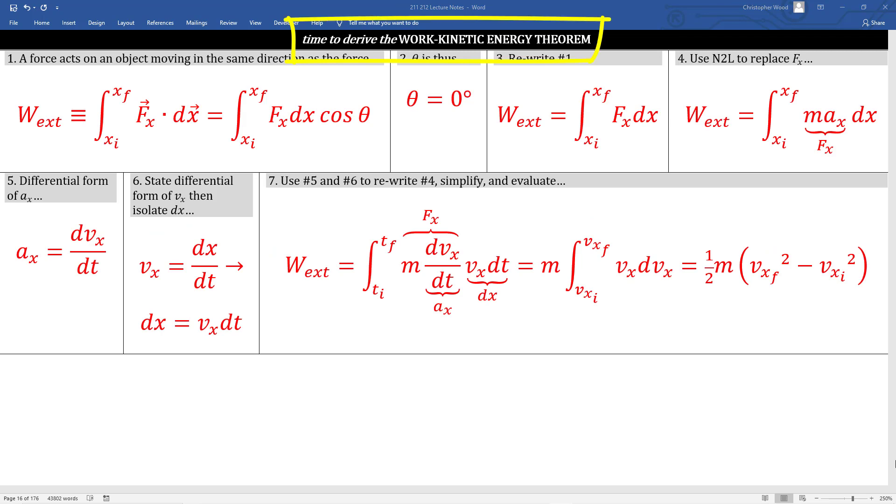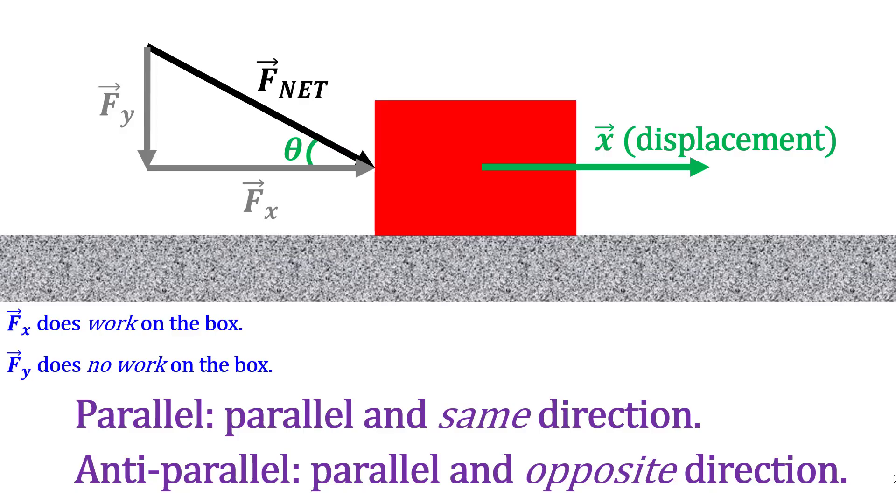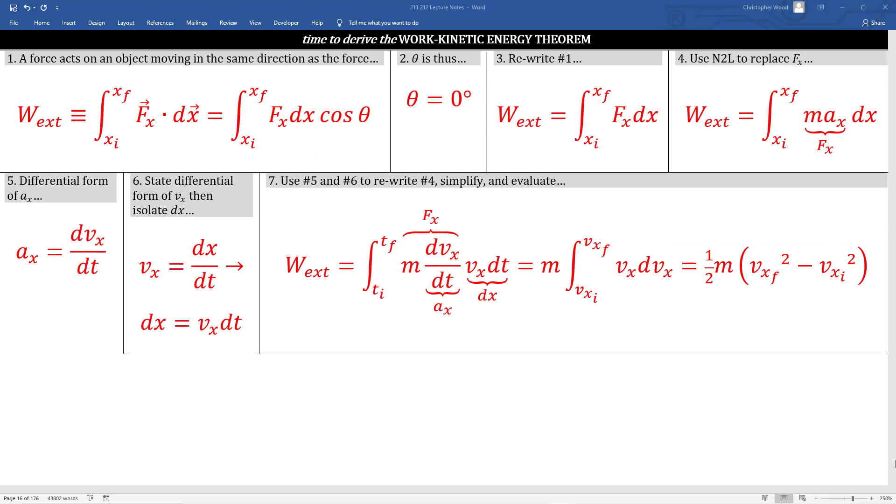Now we turn to the work kinetic energy theorem. This is a very foundational relationship. There's an entire lab dedicated to this. There's lots of homework problems in this category. This is a cornerstone. I'm going to reuse this visual as the basis for this derivation. I walk up to this box. I apply some force to this box at a given angle theta. The box moves through some displacement x. In box number 1, I start with the basic definition of work. I switch from dot product representation to magnitude angle representation. Box 2, theta is zero and remember what theta is. Theta is the angle between the applied force vector and the object's displacement vector.